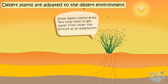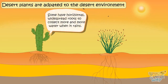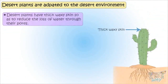Some desert plants grow very long roots to get water from under the ground, and some have horizontal widespread roots to collect more water when it rains. Desert plants have thick waxy skin to reduce the loss of water through their pores.